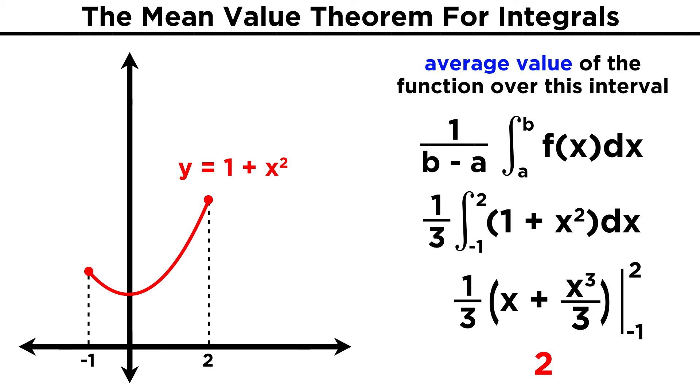So with this result, we can say two things. First, that the average value of this function over this interval is two. Second, if we find the point that corresponds to this average value by finding the x value for which the function equals two, we get plus or minus one.